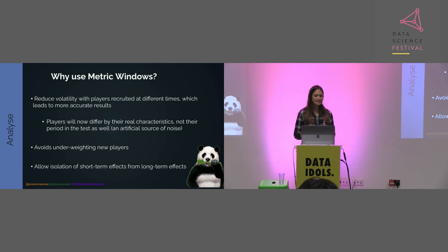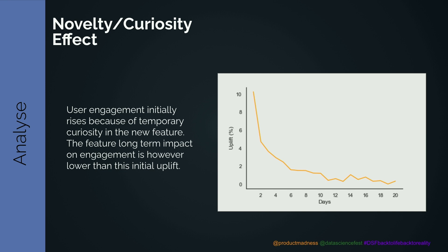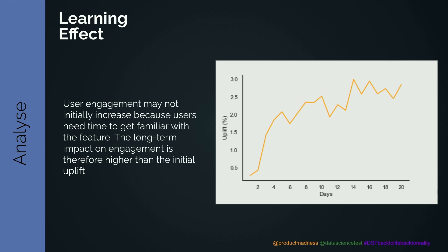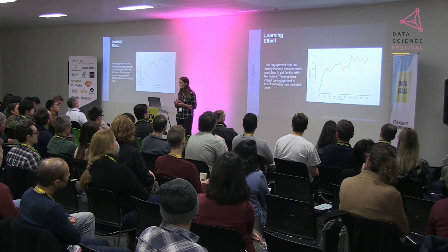One example of short-term versus long-term effects is the novelty or curiosity effect: user engagement initially rises because of temporary curiosity — it's new and exciting — but long-term the impact might actually be lower. For example, on day two we see a 10% uplift, which is great, but from day six onwards this goes down to about 2%. On the opposite side is the learning effect, where user engagement may not initially rise because players need to familiarize themselves or understand how a feature works. The long-term effect is therefore higher than the initial uplift — for example, at two days we might see about a 0.5% uplift, but after six days this rises to about 2 to 3%.